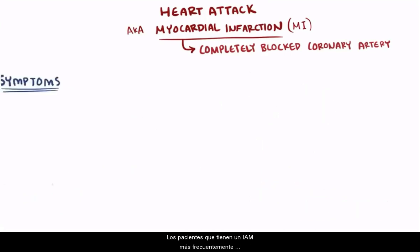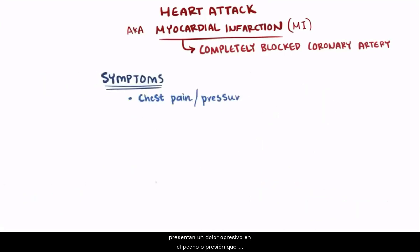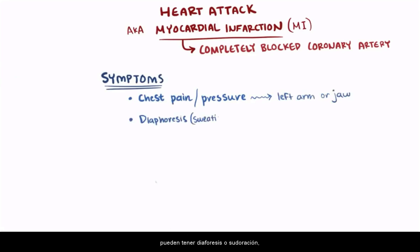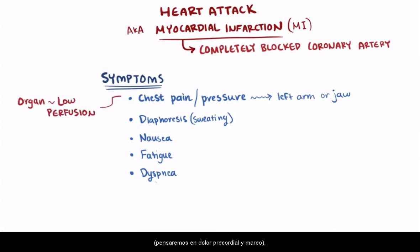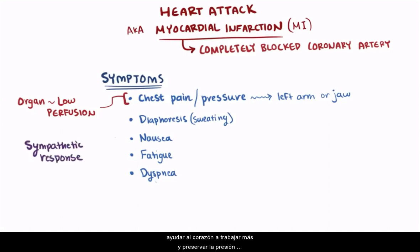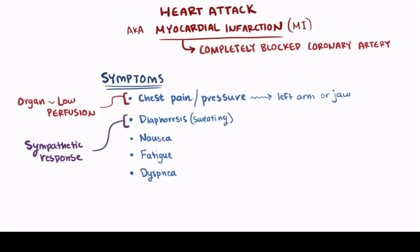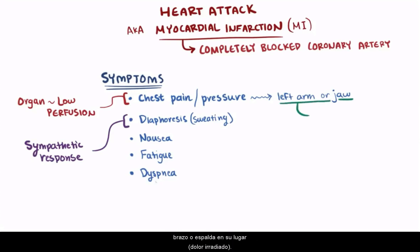Patients that have an MI will most commonly have severe and crushing chest pain or pressure that might radiate up to the left arm or jaw. They might have diaphoresis or sweating, nausea, fatigue, and dyspnea. All of these are either a direct result of an end organ like the heart or the brain not getting enough perfusion — think chest pain and dizziness — or from the sympathetic response to help the heart work harder and preserve blood pressure — think sweating and clammy skin. Many people also have referred pain, where the nerves in the heart are irritated, but that pain can be felt in the jaw, shoulder, arm, or back instead.